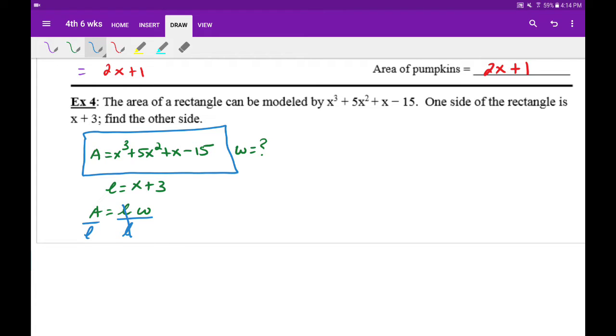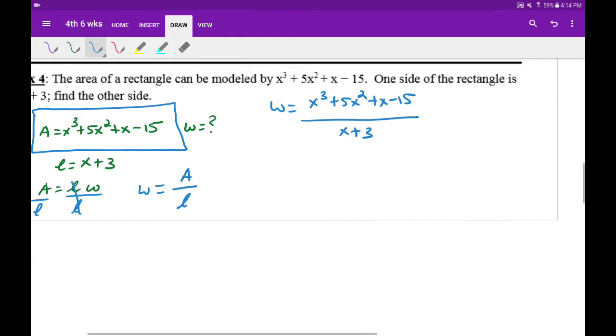The length will cross out here, and basically our width will equal the area over our length. Using that, we can divide this. So we know the area is x cubed plus 5x squared plus x minus 15 divided by x plus 3. So since we're dividing this, I'm going to use synthetic division.